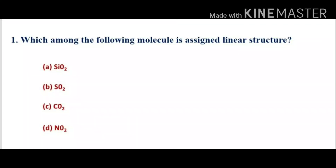The first question: which among the following molecules is assigned a linear structure? First we look at SiO2, silicon dioxide. It is also a linear structure, but it is a network solid structure just like diamond and graphite. So it is not perfectly linear — it is slightly bent.